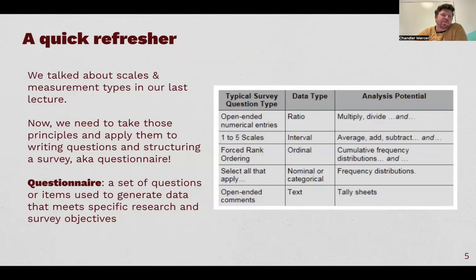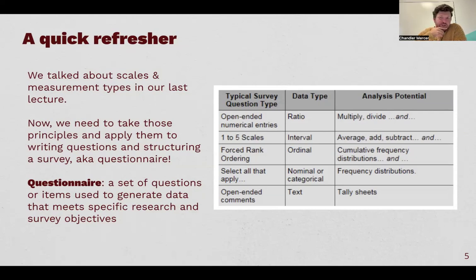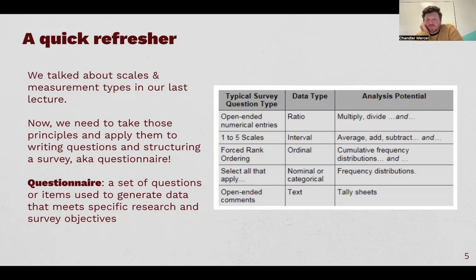I also want to quickly remind you of our last lecture where we talked about measurement and different levels of measurement and survey devices. There's ratio — really specific measurements like weight, height, age. Then there's interval, like a scale. Ordinal, which can also be a scale depending on who you're talking to. And then there's nominal, like binary yes/no type questions. We're going to use these elements and apply them to actually designing a questionnaire.